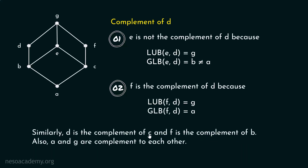Similarly, D is the complement of C and F is the complement of B. The greatest lower bound of C and D is A, and the least upper bound of C and D is G — so D is the complement of C. Also, the greatest lower bound of F and B is A, and the least upper bound of F and B is G — so F is the complement of B. Also, A and G are complements to each other as the least and greatest elements.